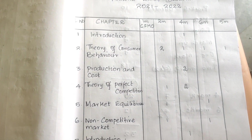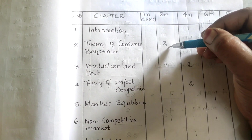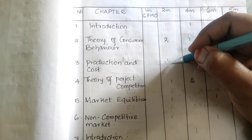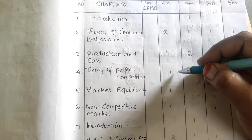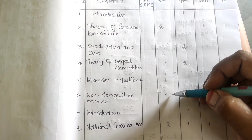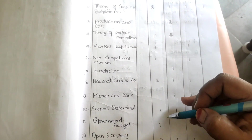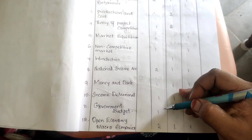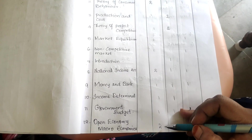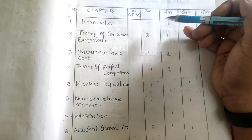For two-mark questions: two questions will be asked from the second chapter, two from the third chapter, one from the fourth chapter, one from the fifth, one from the sixth, one from the eighth, two from the ninth, and one each from the tenth, eleventh, and twelfth chapters — two questions from the twelfth chapter for two marks.